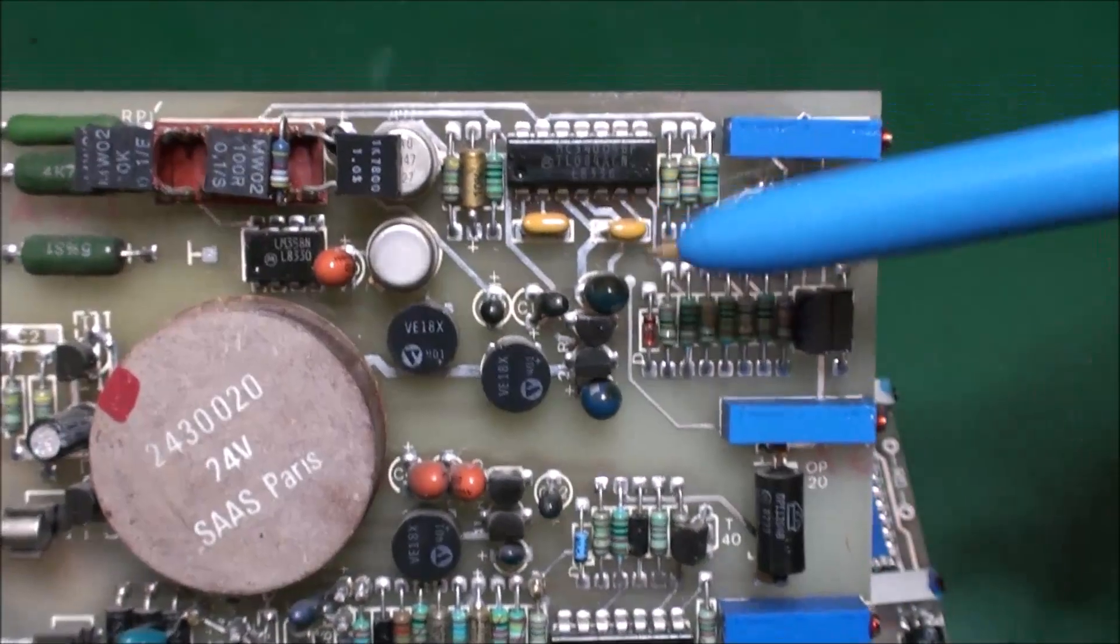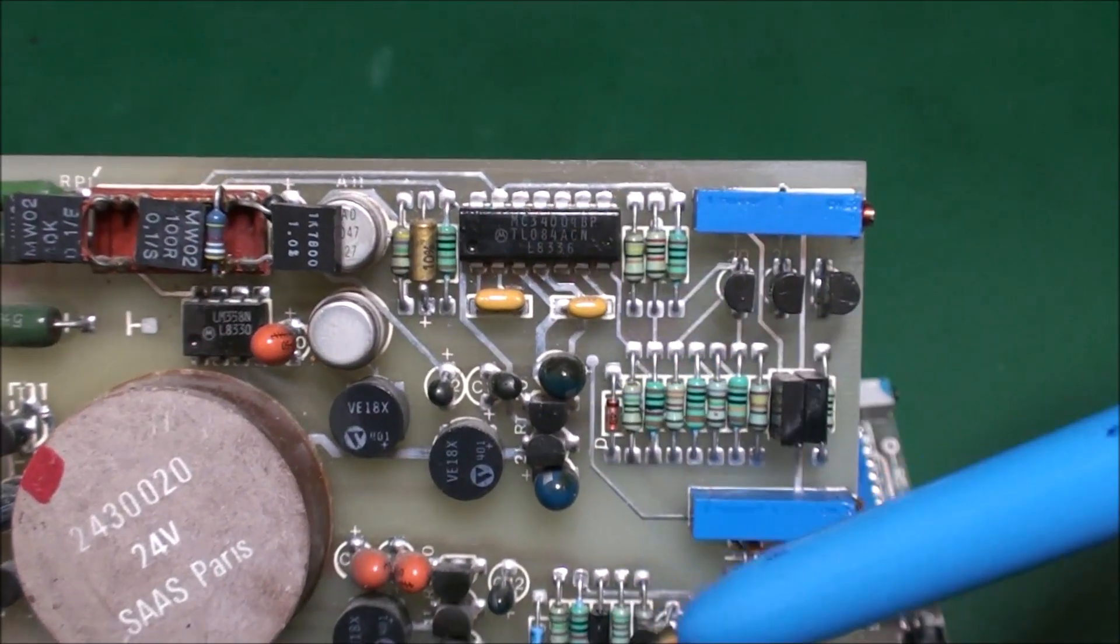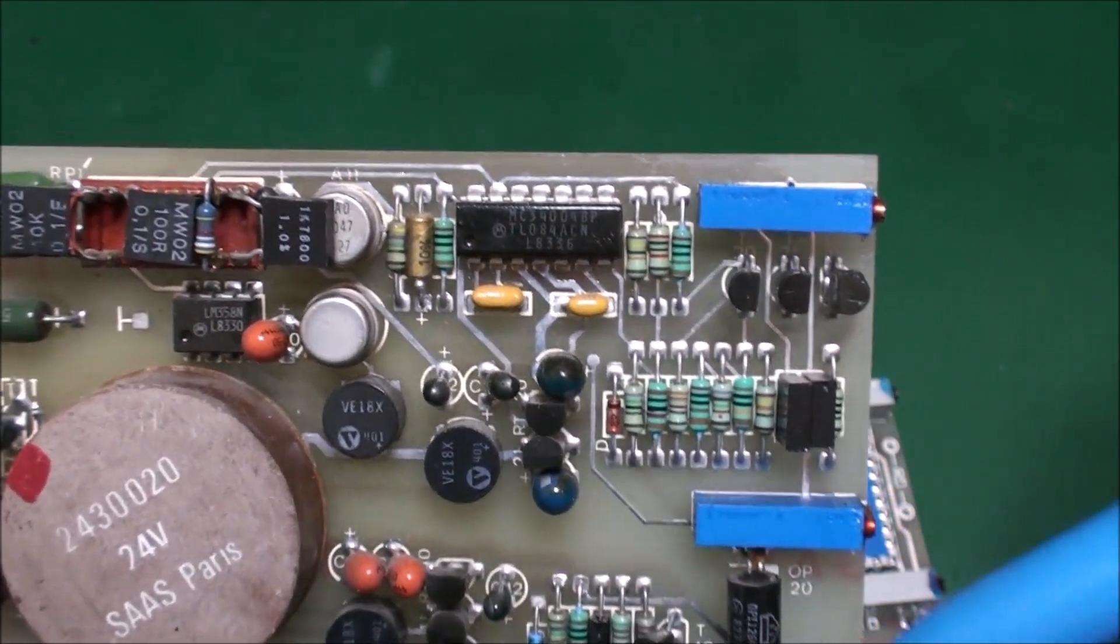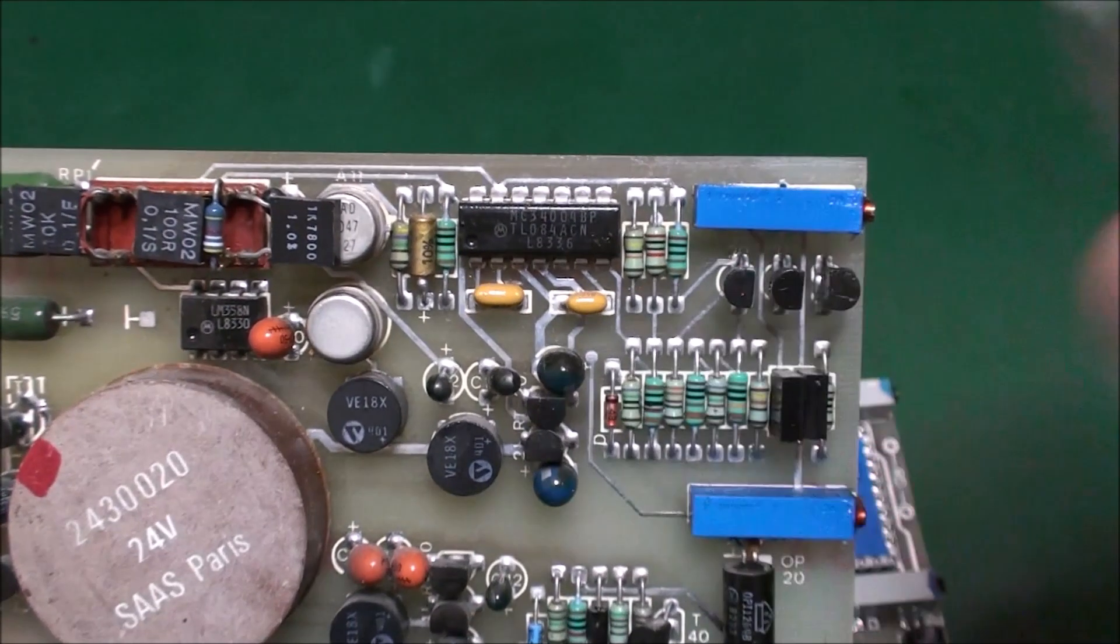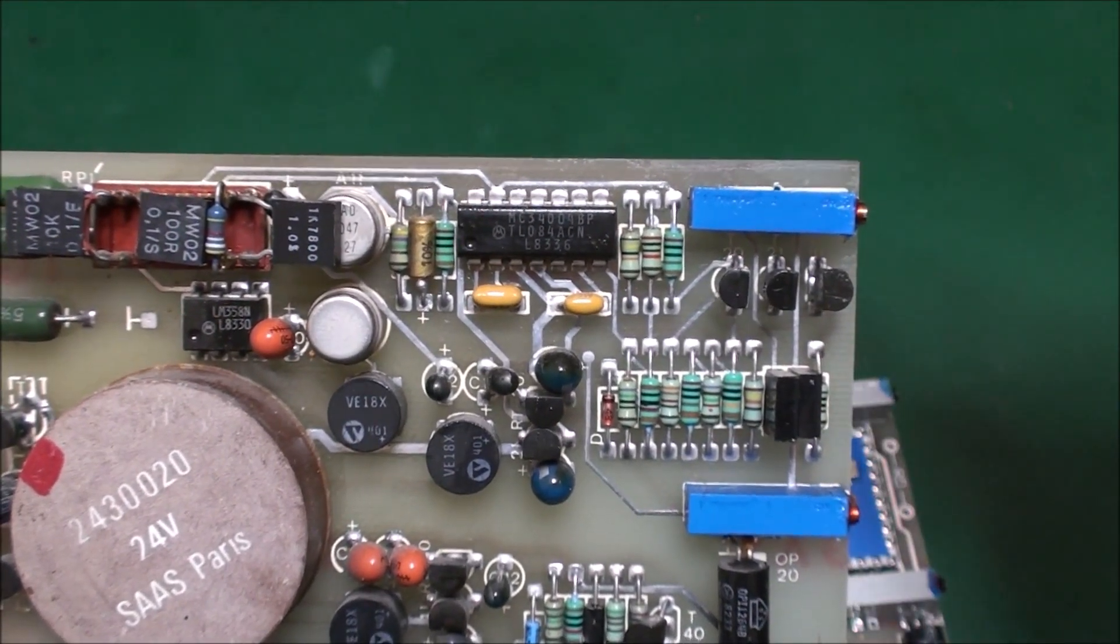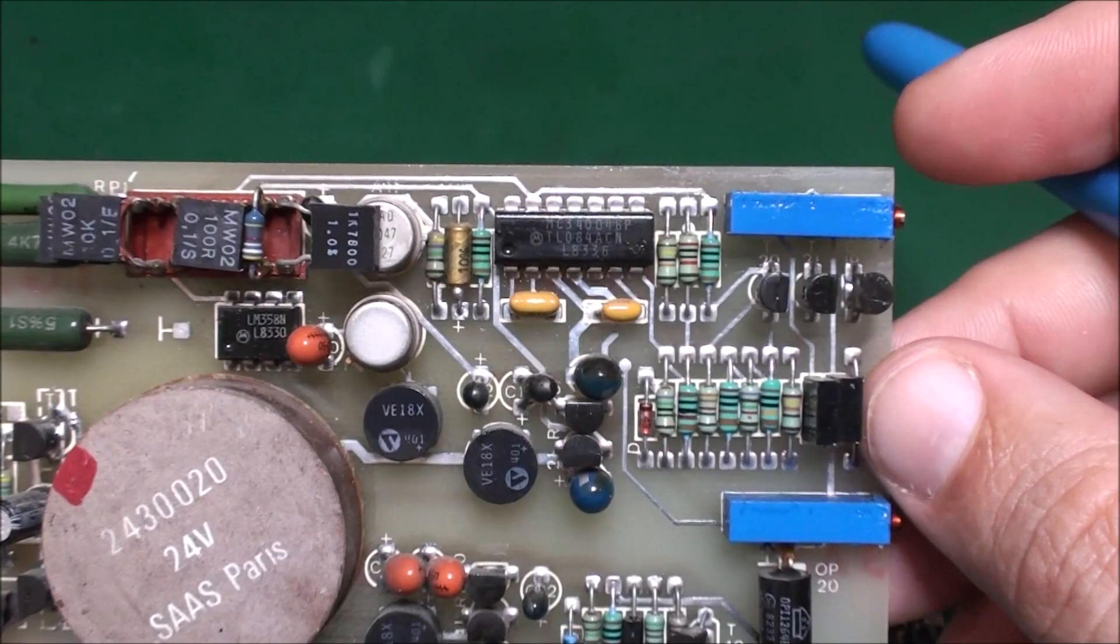Here you have a TL084ACN high voltage JFET and bipolar transistor in a monolithic integrated circuit. It's still expensive, four dollars a piece.